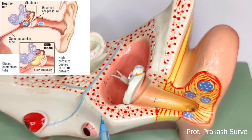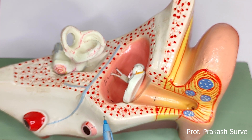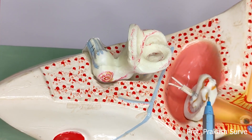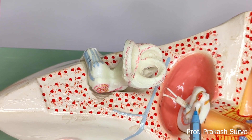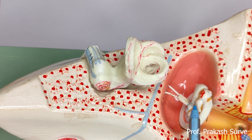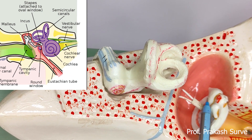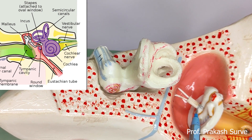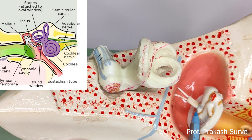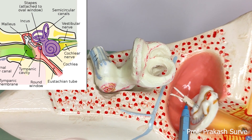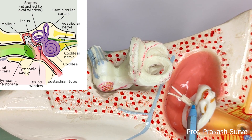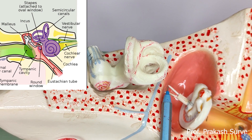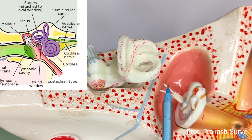The middle ear consists of a chain of three ear ossicles. The first is the malleus, which has a hammer-like structure. Inner to that is the second one, called the incus, also called the anvil. Then the third one is called the stapes, or stirrup — the smallest bone in the body.